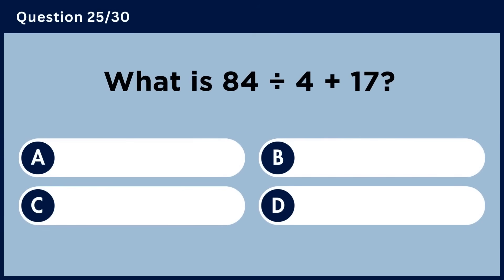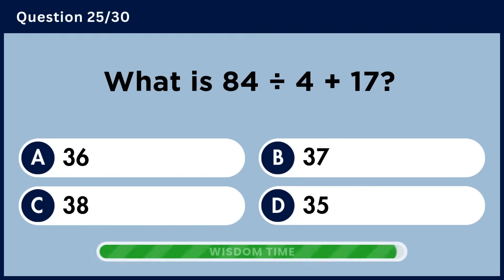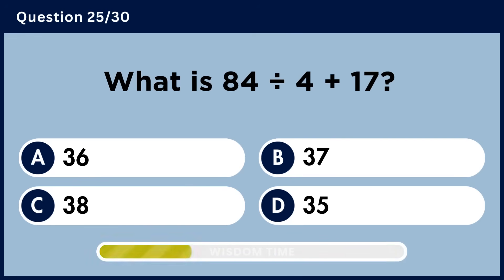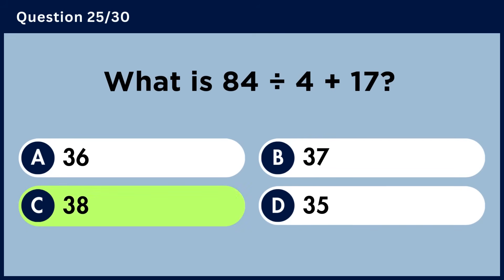What is 84 divided by 4 plus 17? Answer D: 38.